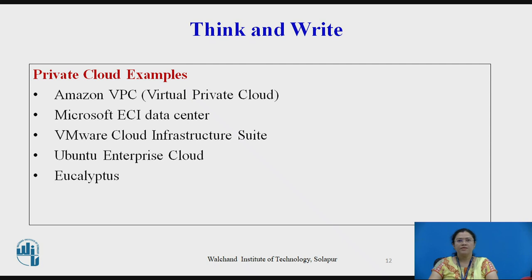The examples of private cloud are Amazon VPC (Virtual Private Cloud), Microsoft ECI data center, VMware Cloud Infrastructure Suite, Ubuntu Enterprise Cloud, and Eucalyptus. Eucalyptus is an open source software platform for implementing infrastructure as a service in a private or hybrid cloud computing environment. It pulls together existing virtualized infrastructure to create cloud resources for infrastructure as a service, network as a service, and storage as a service. The name Eucalyptus is an acronym for Elastic Utility Computing Architecture for Linking Your Programs to Useful Systems.